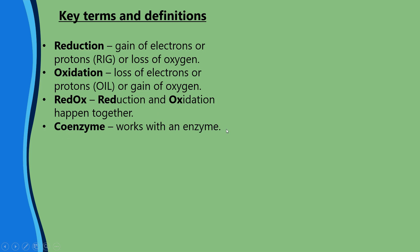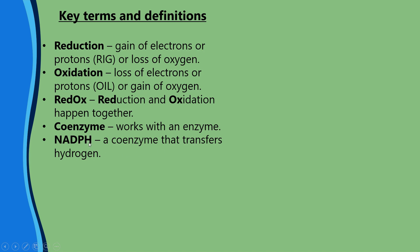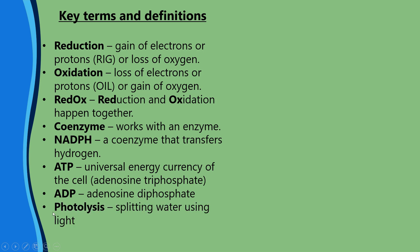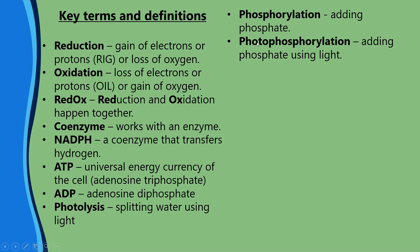A coenzyme is a molecule that works with an enzyme. NADPH is the key coenzyme in this lesson — it transfers hydrogen, which is why it has an H on the end. ATP is the universal energy currency of the cell and stands for adenosine triphosphate. ADP stands for adenosine diphosphate — 'di' meaning two phosphates. 'Photo' means light, 'lysis' means splitting, so photolysis is splitting water using light. Phosphorylation means adding a phosphate group; photophosphorylation means adding phosphate using light.